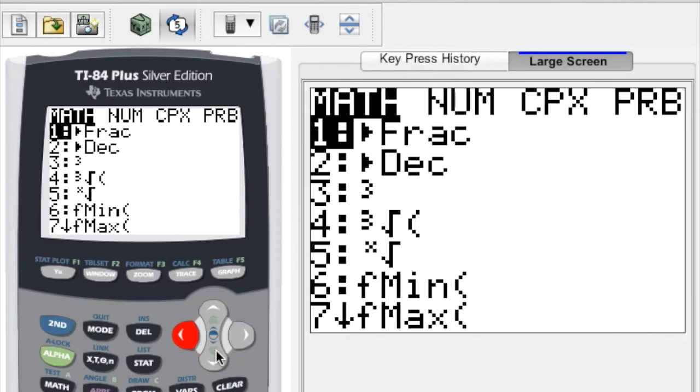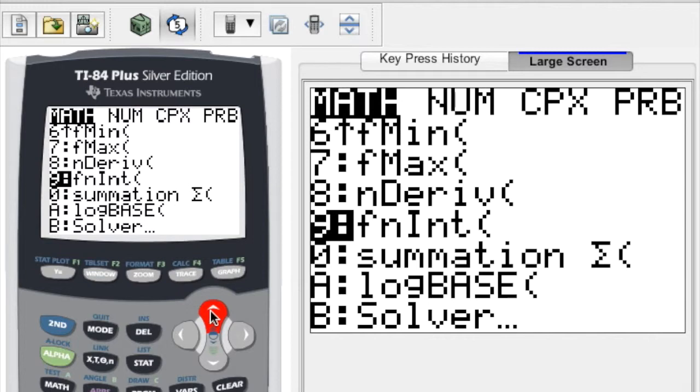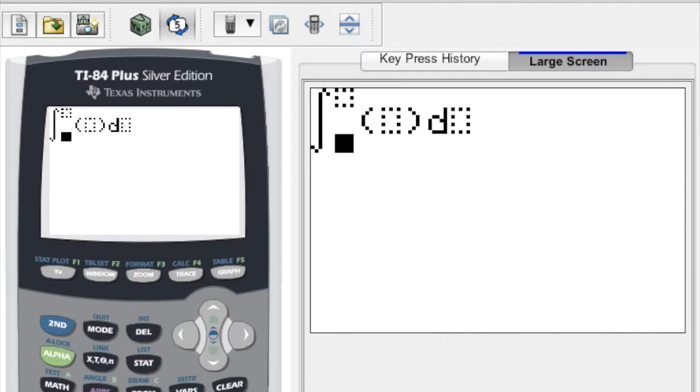Now what we're going to do is use the built-in definite integral function on the calculator, which you can find in your math menu. Just hit the math key. And then you want to scroll all the way down into the bottom set of possibilities and choose option number 9, which says fn int. When you do that, you're going to get the setup of there's your elongated S, and then you're going to fill in the bottom and the top values that you're integrating from.